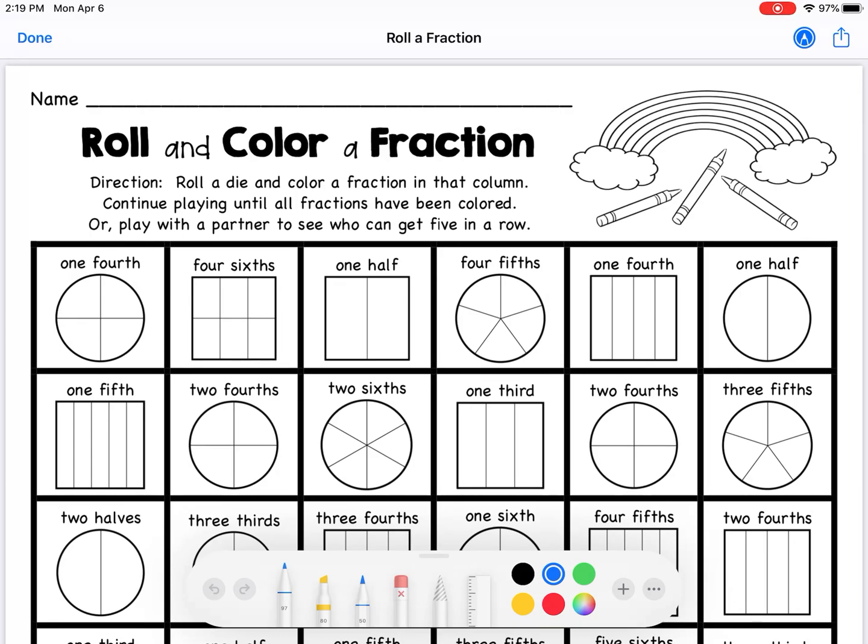So I'm gonna play with my husband Kyle. Say hi Kyle. Hello. Hopefully you could hear that. He's very quiet. And we are going to play this game Roll and Color a Fraction together. So we're gonna take turns rolling our six-sided die.